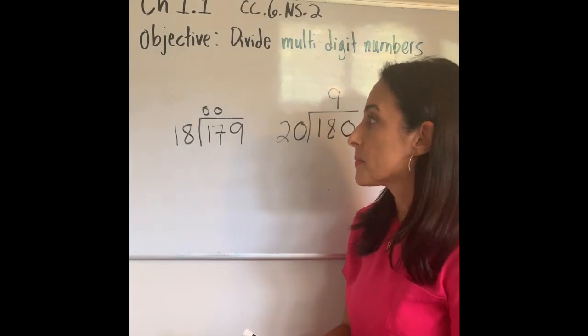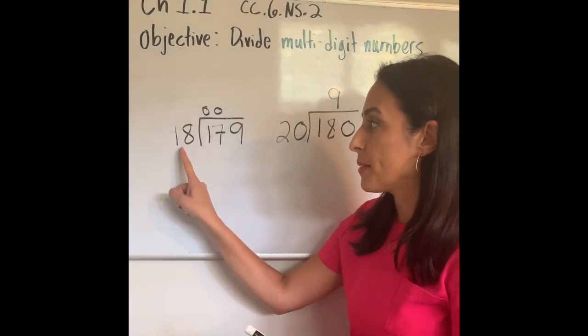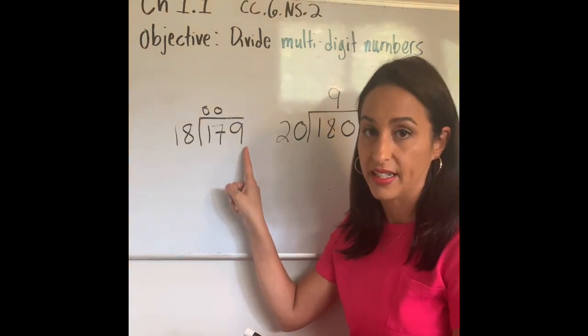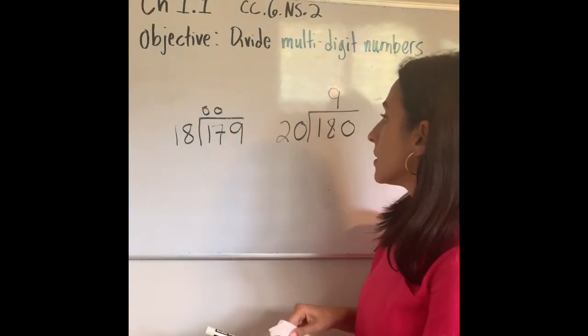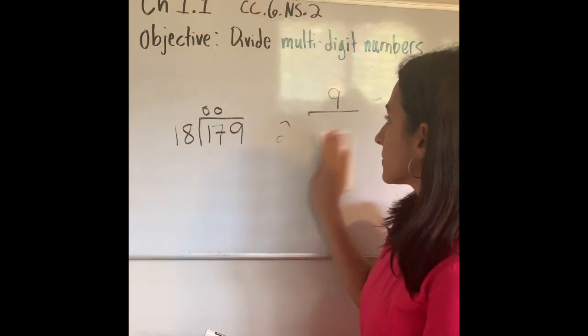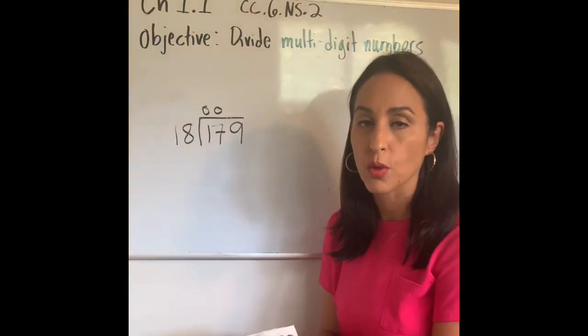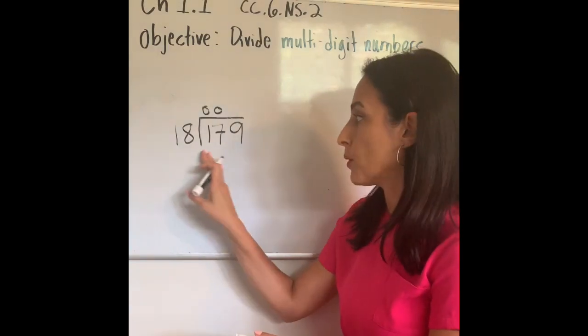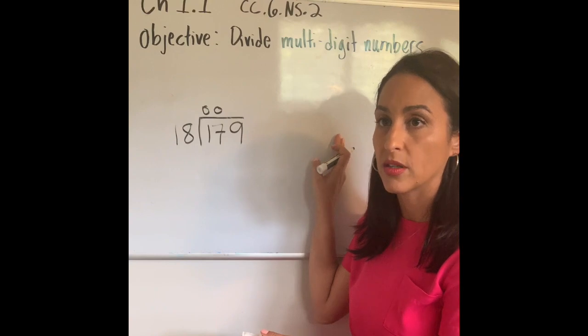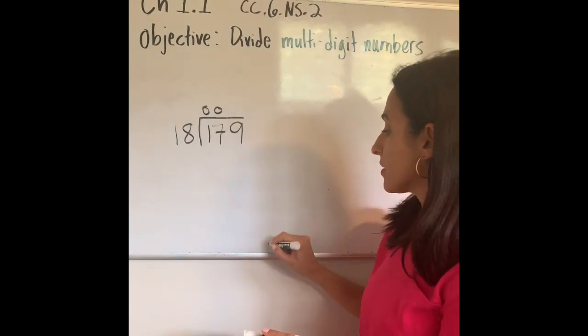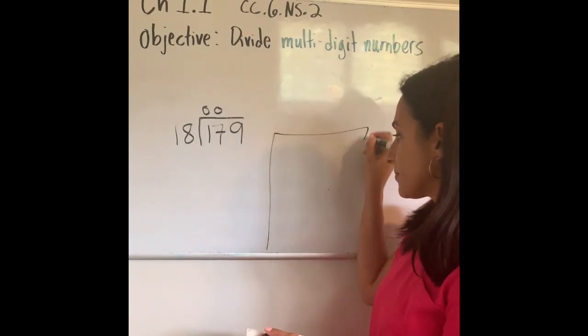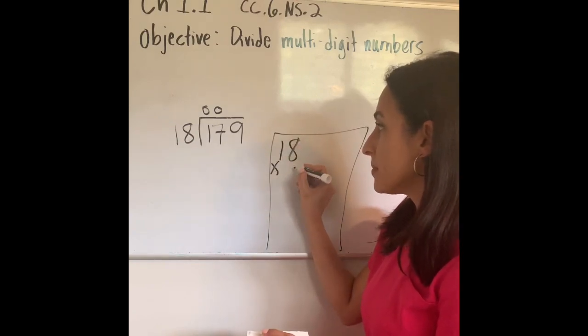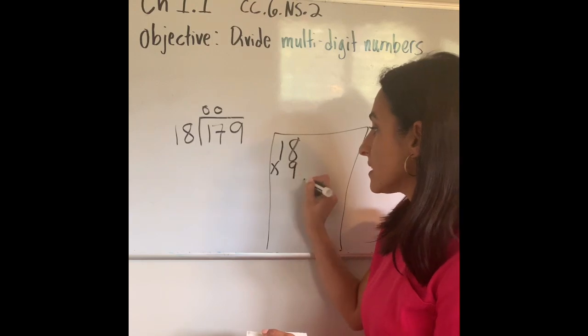Well, this information is very important because now I know that if I multiply 18 times 9, it might get me close to 179. I'm going to do this work on the side. If you are doing this work in your notebook and you wrote down this problem and you wrote down the 20 into 180, we can just box out a space in your notebook. I like to do that, or I can do my work.